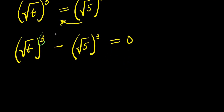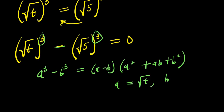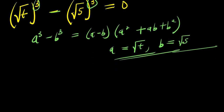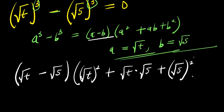Now there is a cube on each term and a minus sign, so we use the difference of cubes identity: a³ − b³ = (a − b)(a² + ab + b²). Here a equals root t and b equals root 5. Applying this: (√t − √5)(√t² + √t · √5 + √5²) = 0.